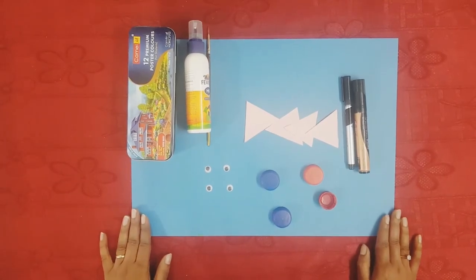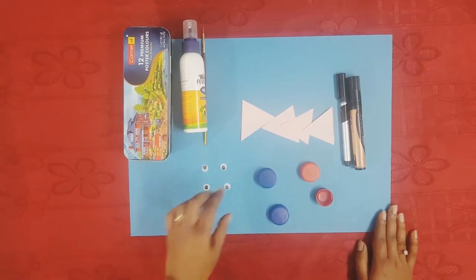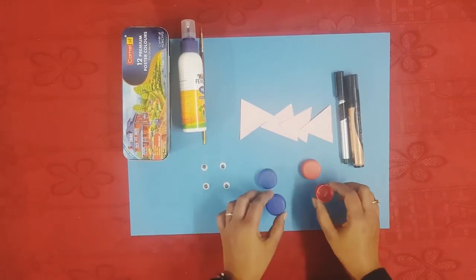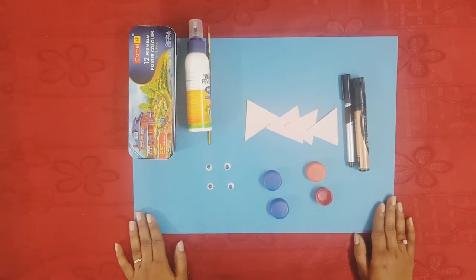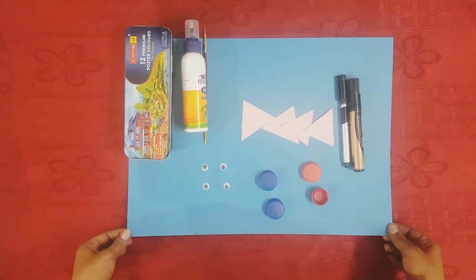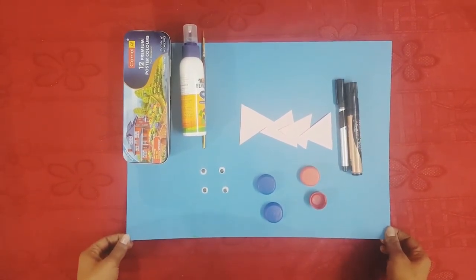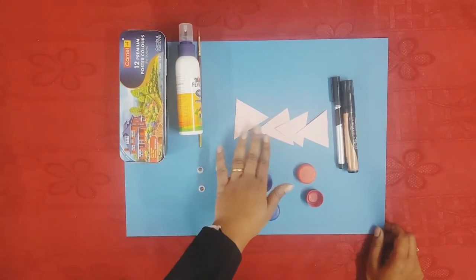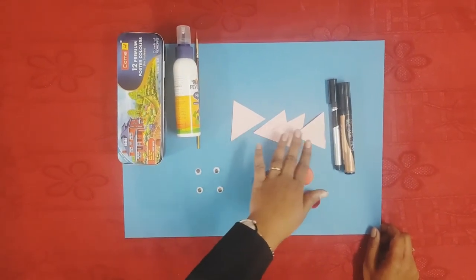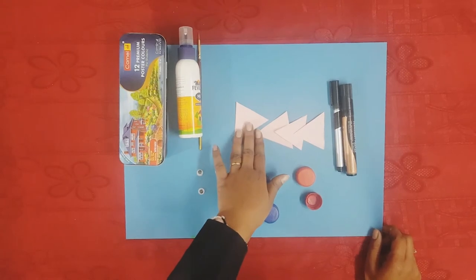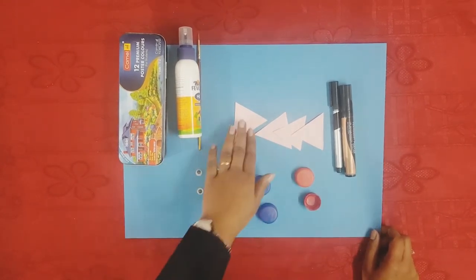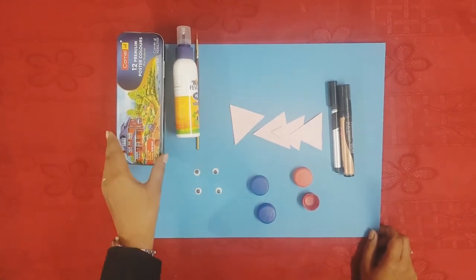To make the bottle cap fish, we require the bottle caps, which are easily available at your home. The blue color oil pastel sheet, this is easily available at the stationery shop. Then, the pink color oil pastel sheet, triangle shaped. You can use any other color also. I have used pink over here.